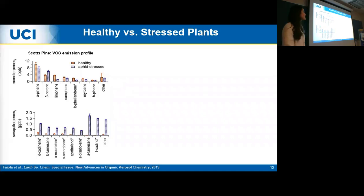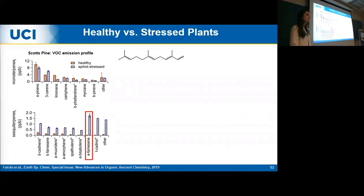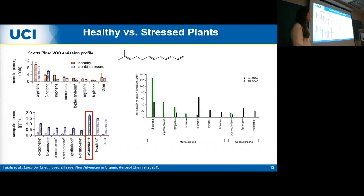Another study by Professor Celia Fiola investigated the VOC emission profile of healthy and aphid-stressed Scots pine trees. Both healthy and aphid-stressed cases were dominated by alpha-pinene and monoterpenes. However, there was an increase in sesquiterpenes — mainly farnesene — for the aphid-stressed scenario. Farnesene is a well-characterized plant stress hormone induced by aphid infestation. I modeled this paper to create two commercially available mixtures: one representing healthy plant SOA and one representing stressed SOA, with the stressed mixture having an increased fraction of sesquiterpenes.